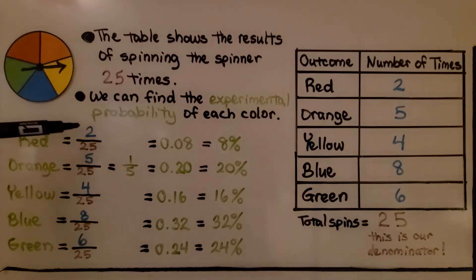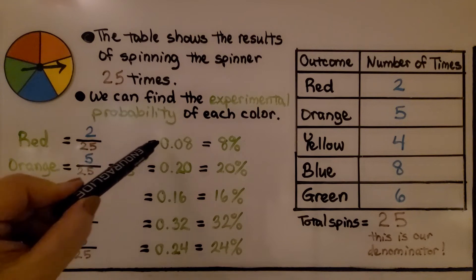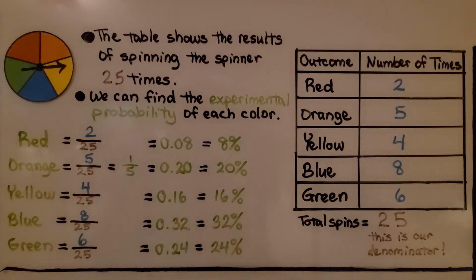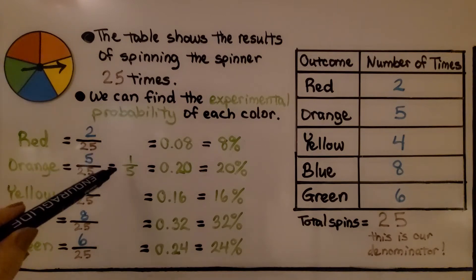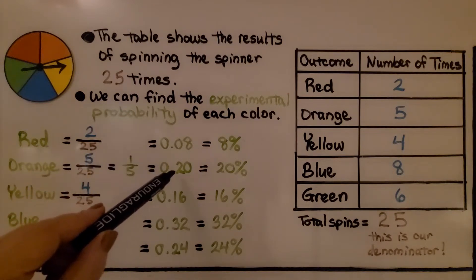For red, we have two twenty-fifths, which as a decimal is eight hundredths, which would be eight percent. Orange, we have five twenty-fifths, which is one-fifth, which is twenty-hundredths, we could also say two-tenths, and it's twenty percent.